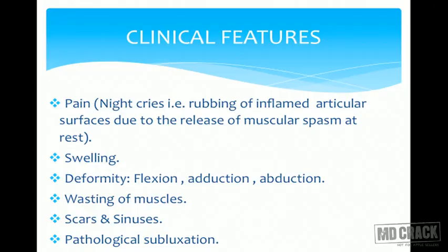There is also swelling and deformities in the form of flexion, adduction, or abduction. In long-term tuberculosis, it also causes wasting of the muscles. There are classical scars and sinuses present, and finally there is pathological subluxation which can occur at the hip joint.